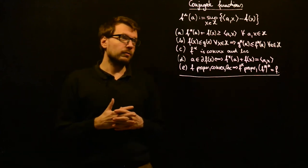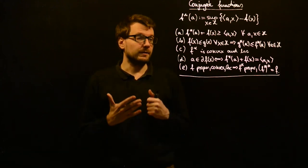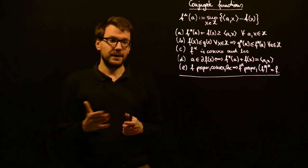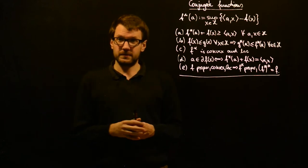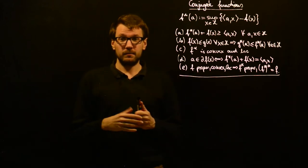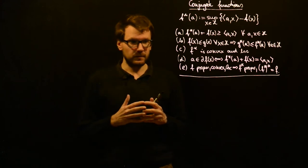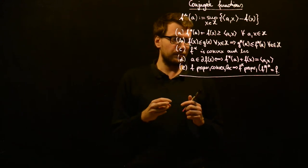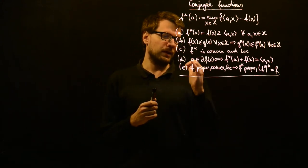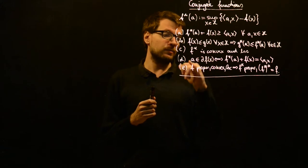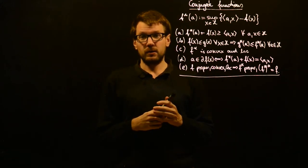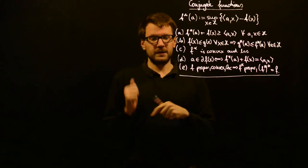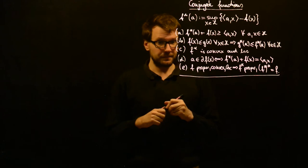Now we want to show more properties of conjugate functions, especially those properties which are related to the sub-differential of the conjugate function and proximal points of the conjugate function. We begin with the property which basically implies that whenever we have a sub-gradient of f at a certain point, we automatically get a sub-gradient of f-star via inverting argument and result.